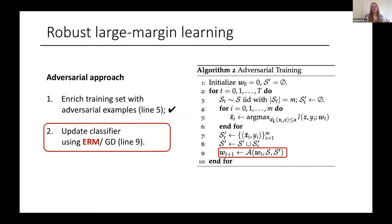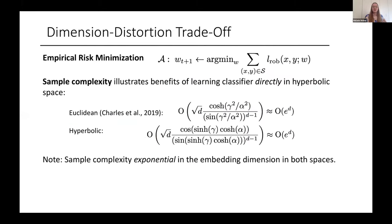We also analyze a second update rule, an empirical risk minimizer. Again, the update rule should look very familiar. The theoretical analysis of that update was quite different from the adversarial gradient descent. It mostly relies on spherical coding in hyperbolic space. The sample complexity that we get is shown down here. This looks quite complicated, but by simplifying it, one sees that this gets exponentially in the dimension of the embedding space. And a similar result is actually known for an adversarial approach with empirical risk minimizer in Euclidean space. This has been derived in a paper by Charles et al. So we have equivalent results in both Euclidean and hyperbolic space. Therefore we can directly compare the approaches.